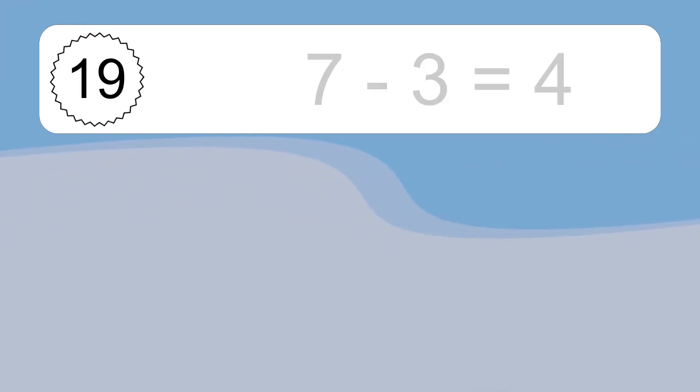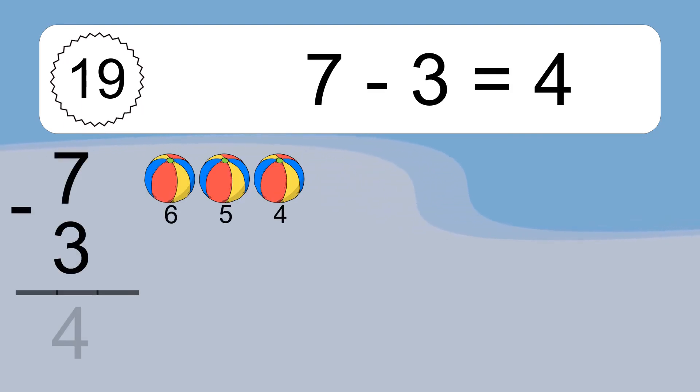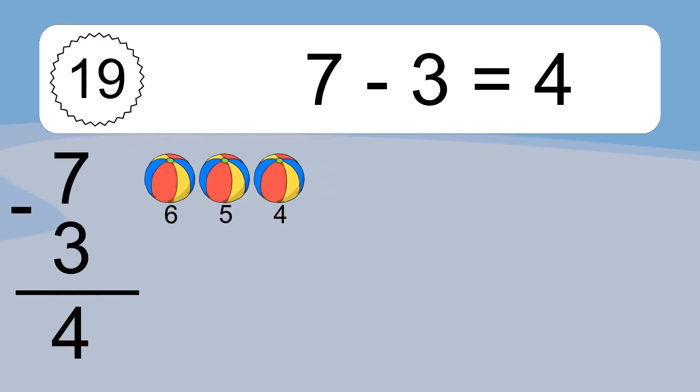7 minus 3 equals what? 7 minus 3 equals 4. Let's count it. 6, 5, 4.